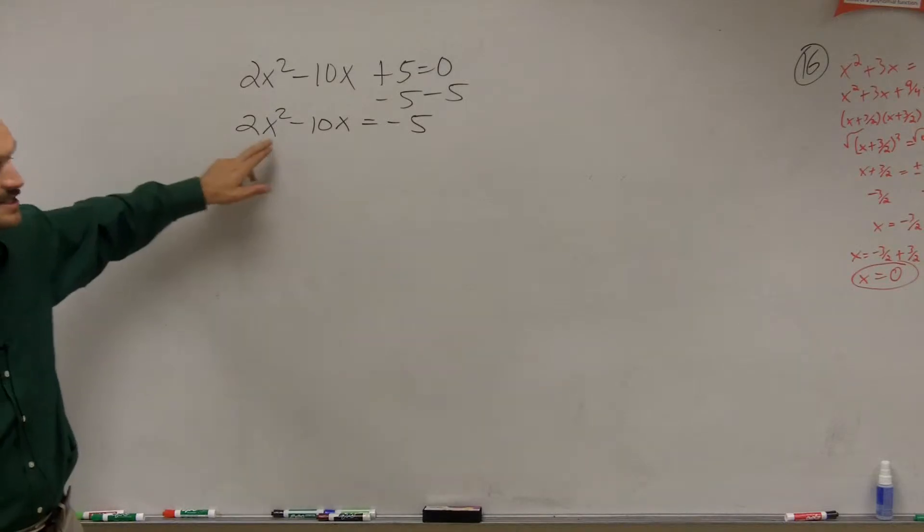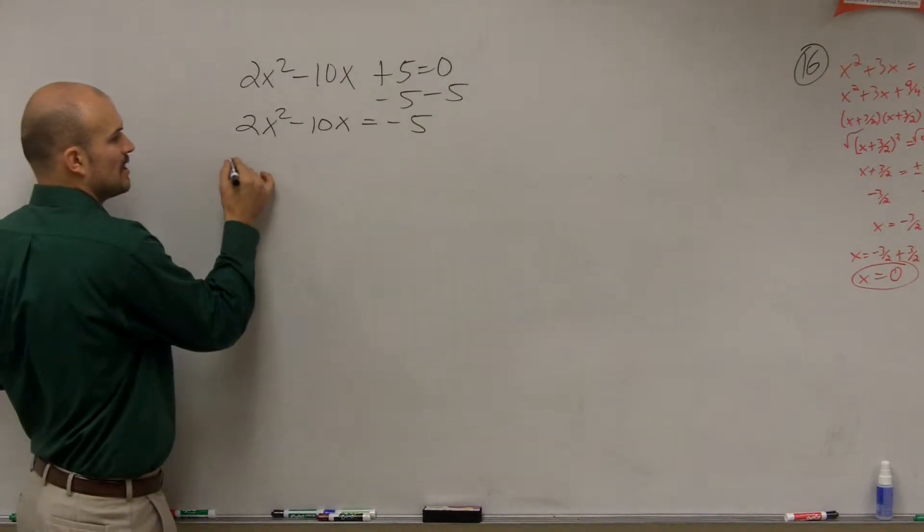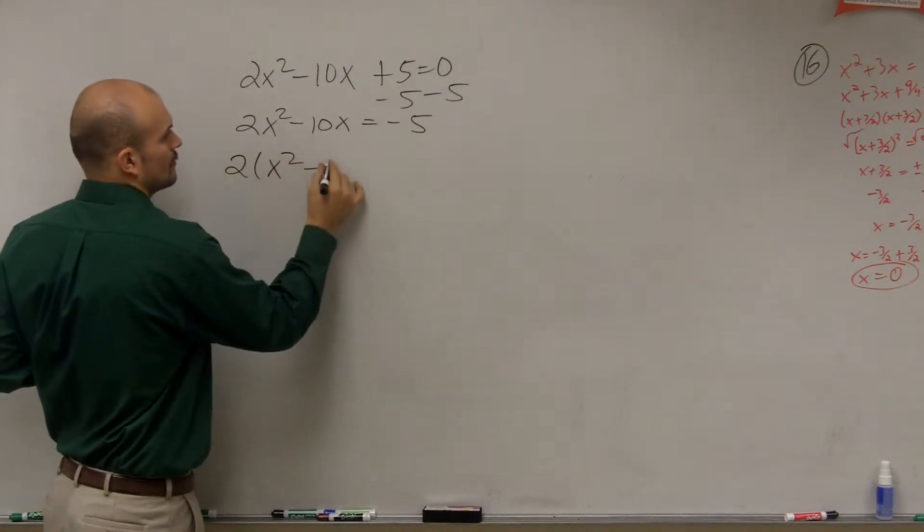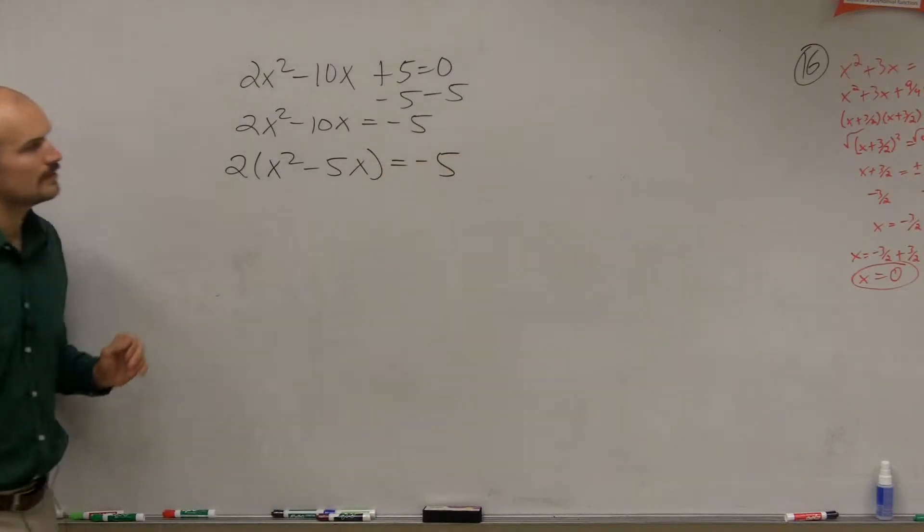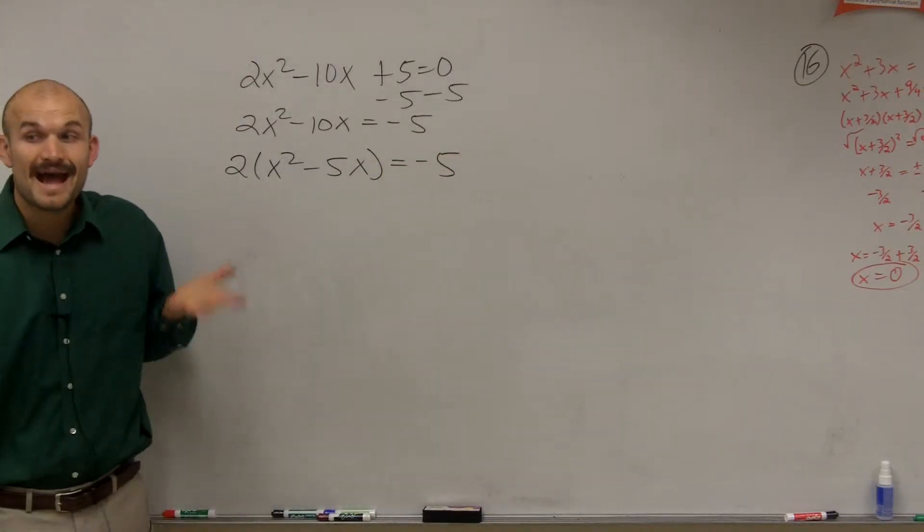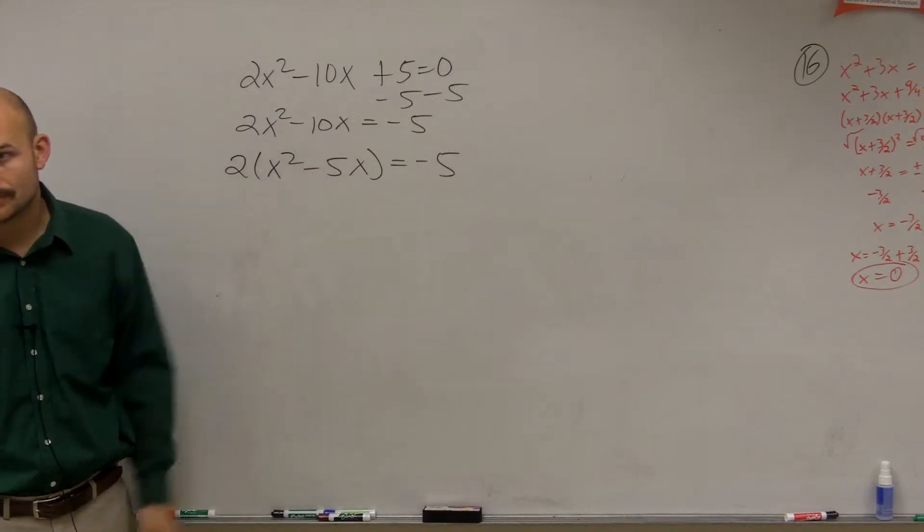Now the next thing we need to do is we can only complete the square when a is equal to 1. So I need to factor out my 2. Now that I factor out a 2, now I can complete the square.